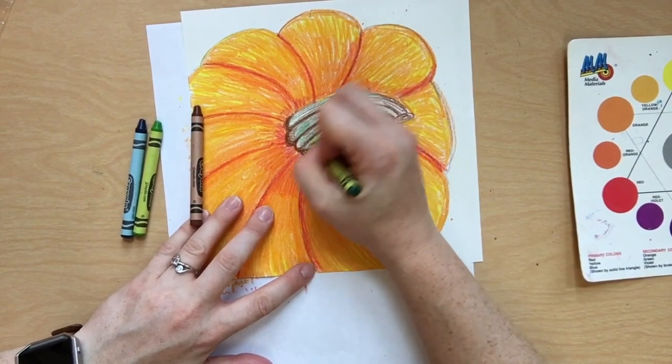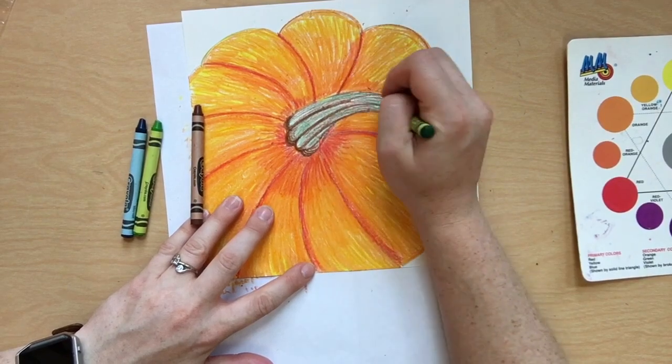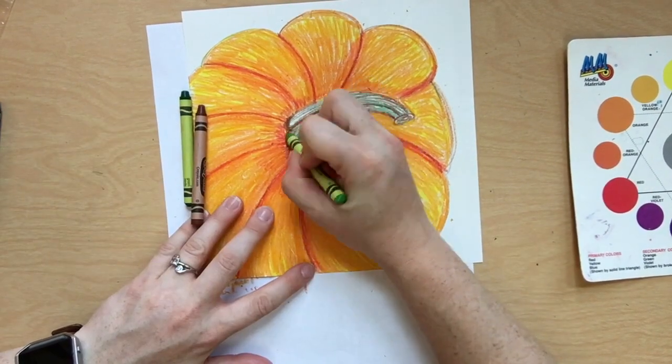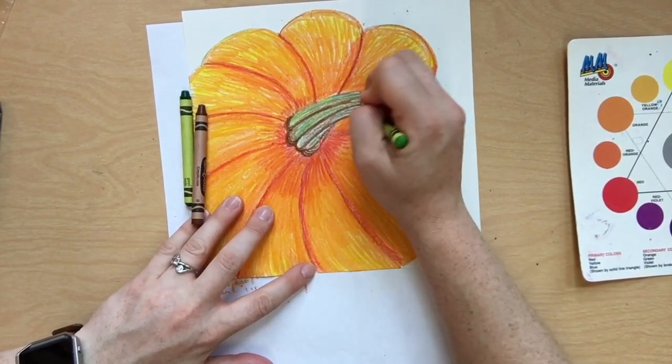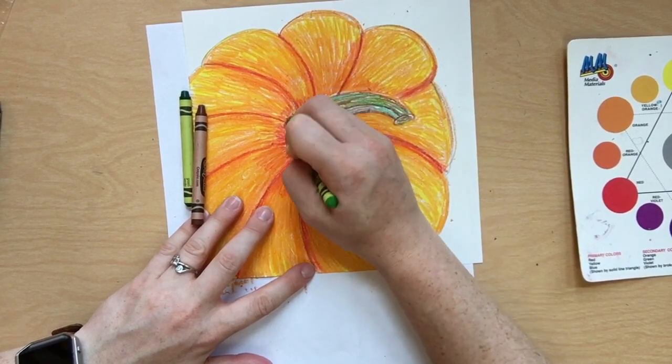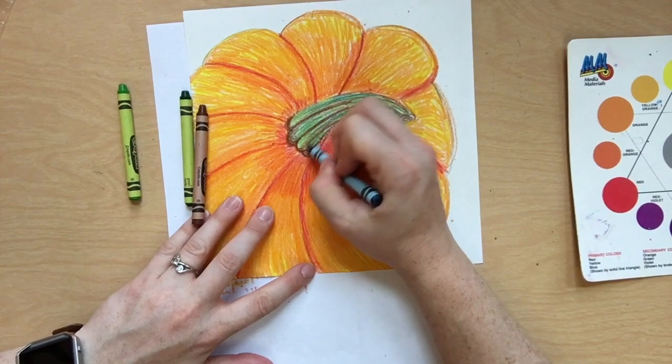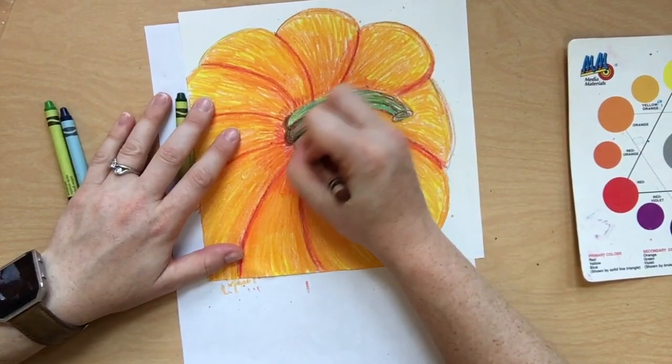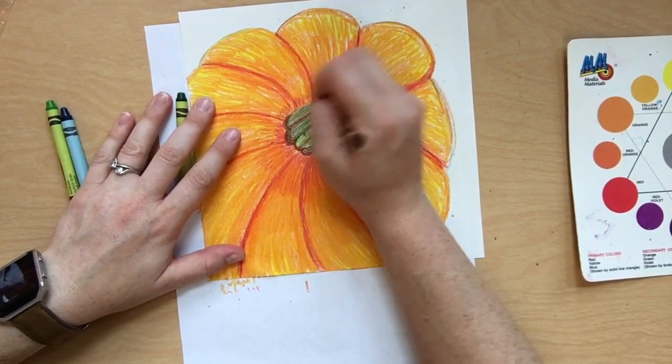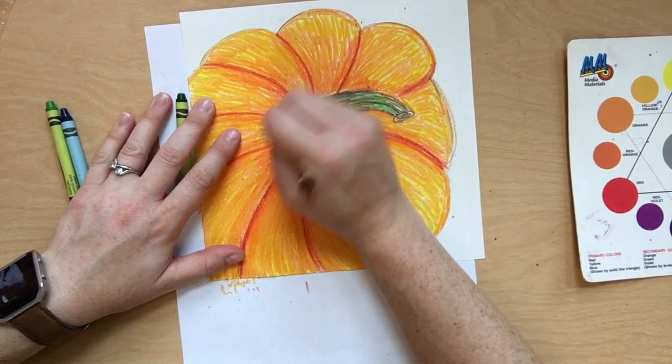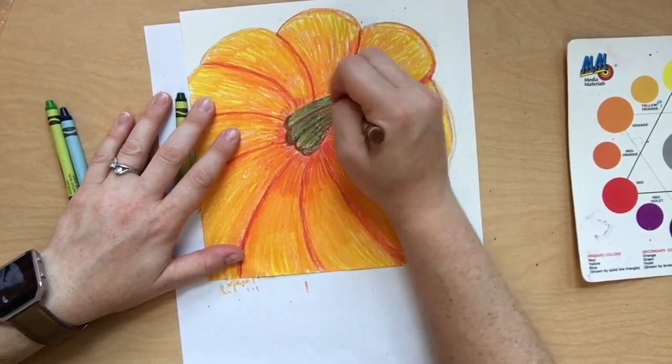Then we'll use green. And do the same thing. Lightly color. We're adding and building up layers of color. Then yellow-green. And then if you want, some blue-green. And I noticed it was way too bright for my liking, so I toned it down a little bit with some brown.